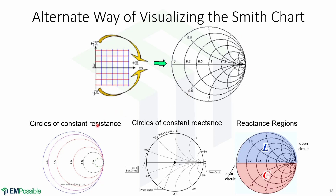As a summary, we derived the circles of constant resistance and the circles of constant reactance. By combining them together via superposition, we obtain the full Smith chart, with reactance regions in which the upper half corresponds to the inductive region and the bottom half corresponds to the capacitive region.